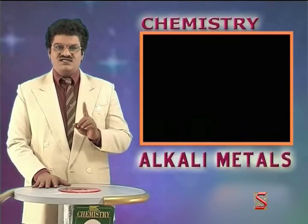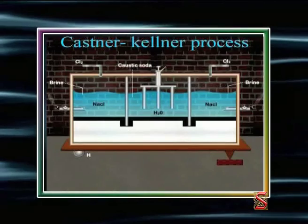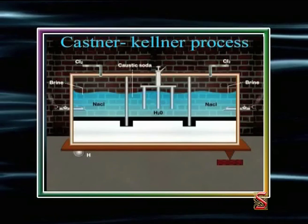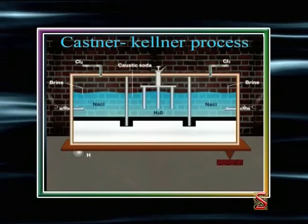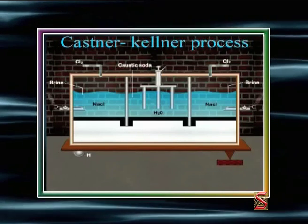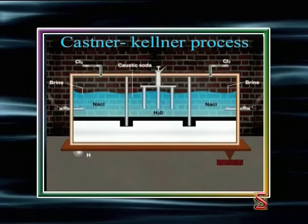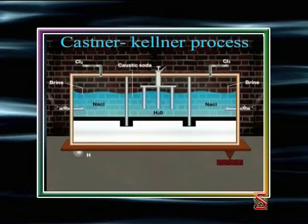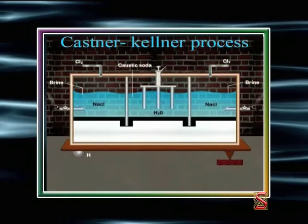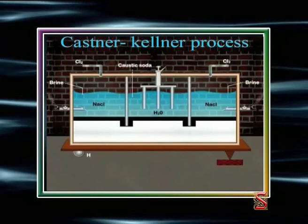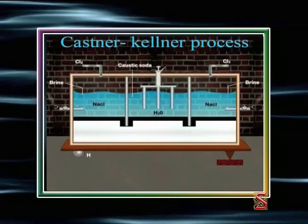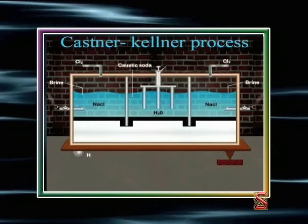The cell consists of a large rectangular iron tank divided into three compartments by two suspended slate partitions. The slate partitions do not touch the bottom. A layer of mercury is placed at the bottom of the tank such that the slate partitions slightly dip into the mercury layer.